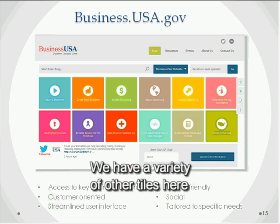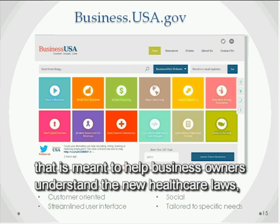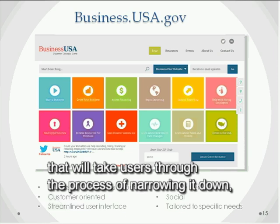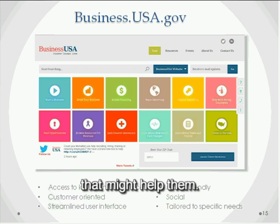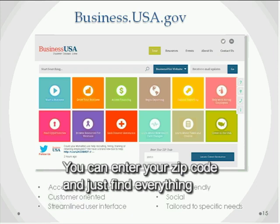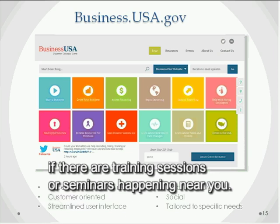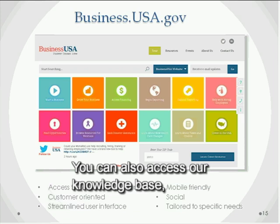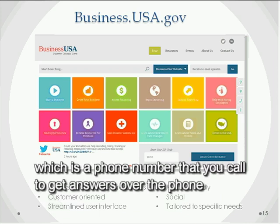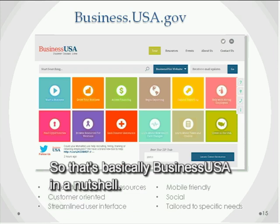We have a variety of other tiles covering exporting, financing, disaster assistance, a tile helping business owners understand the new healthcare laws, veterans' resources, and other subject-based categories. You can enter your zip code to find everything going on near you, browse events directly, access our knowledge base, ask a question, or call 1-800-FED-INFO to get answers over the phone if you're not finding what you need on the website.